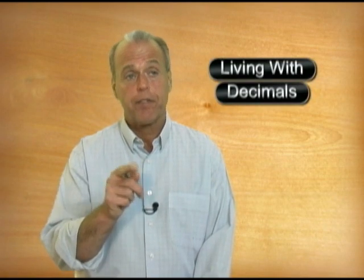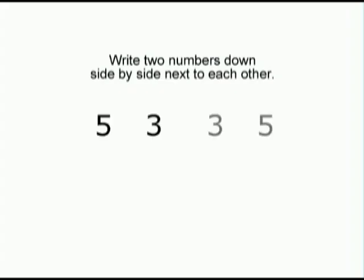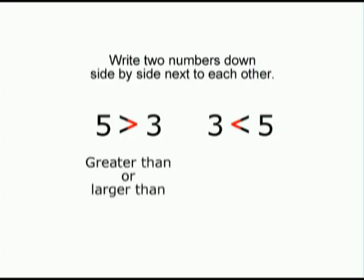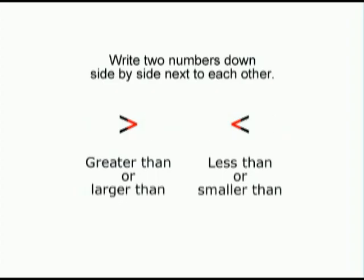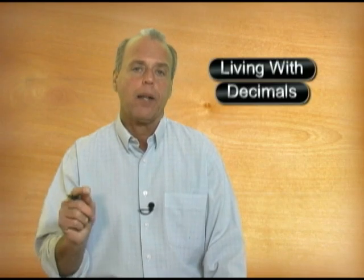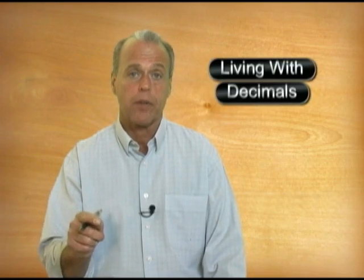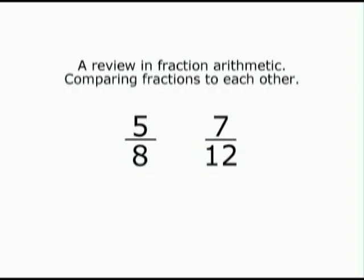That's correct. If you ever forget the definition of the two ways the arrowhead is pointing, just write two numbers alongside each other, and the only part you have to remember is the arrow tip points to the smaller number and the open end points to the larger number. Then all you have to do is read the relationship of the numbers to each other from left to right. Now let's use this information to compare decimal numbers to each other. But first we have to review a little about fractions, since we're going to have to change the decimal numbers to fractions before we can compare them to each other.